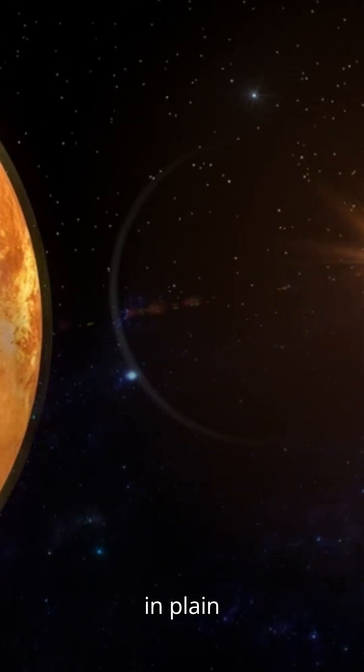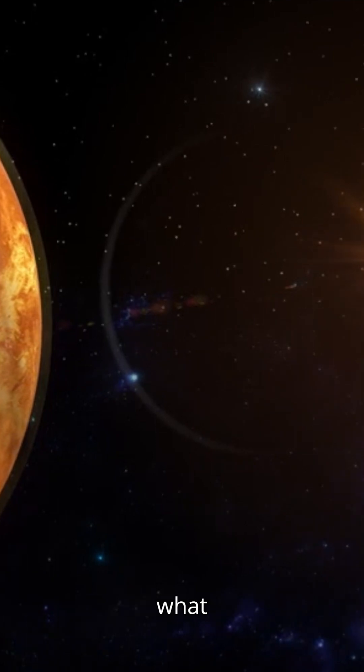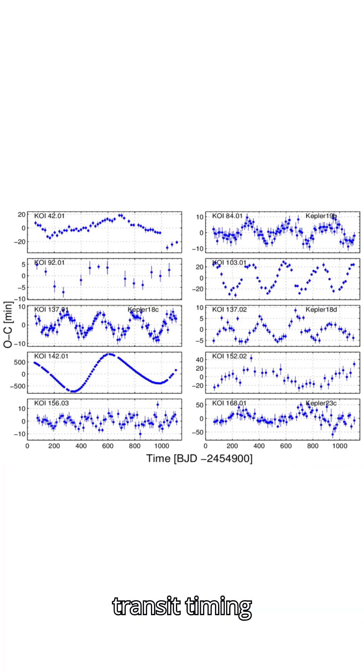Imagine a planet hiding in plain sight, never visible yet undeniably there. That's what astronomers believe they've found using a method called transit timing variations, or TTVs.